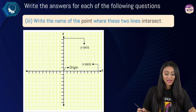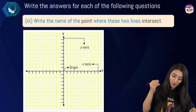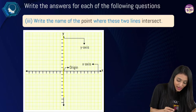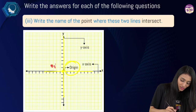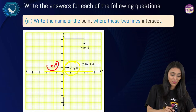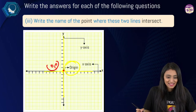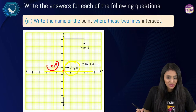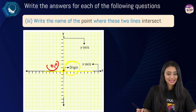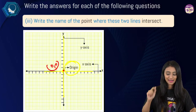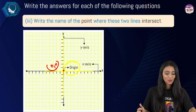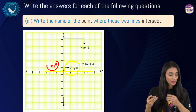The horizontal line is called the x-axis and the vertical line is called the y-axis. These two lines divide the plane into four parts — each part is called a quadrant: quadrant 1, quadrant 2, quadrant 3, and quadrant 4. Write the name of the point where these two lines intersect — that is the origin, and its coordinates are 0, 0.